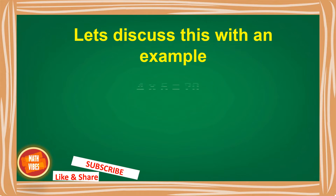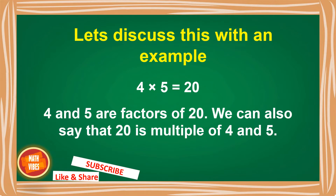Let's discuss it by taking an example. This is a multiplication fact we discussed in the previous video: four fives are 20. We have seen that four and five here are called the factors of a number. And we can also say that 20 is the multiple of four and five. Because when two numbers are multiplied, we get the product, and the product is called the multiple. So four and five are the factors of 20, and 20 is the multiple of 4 and 5.